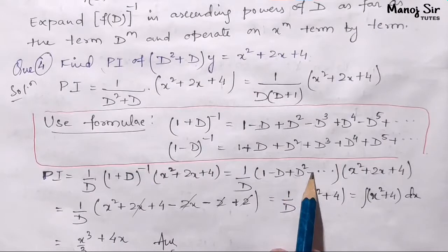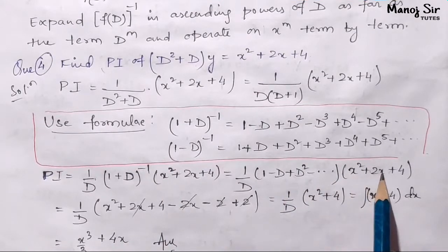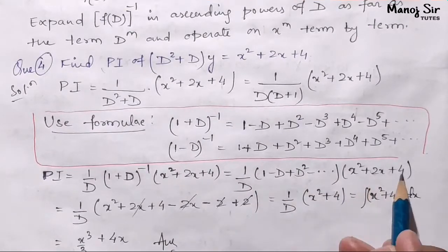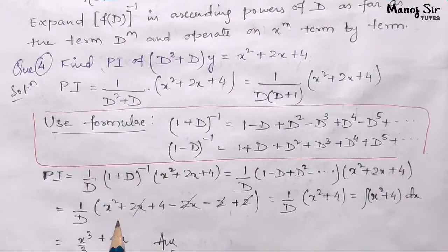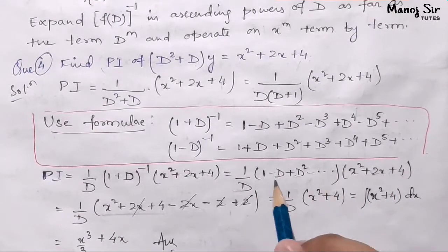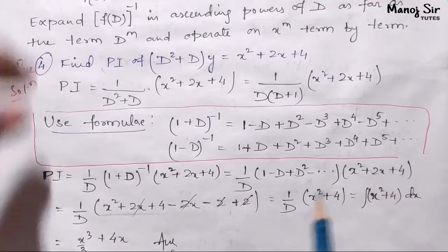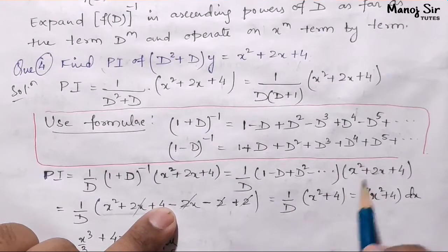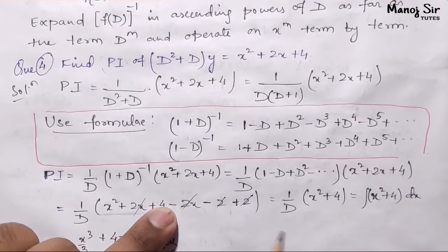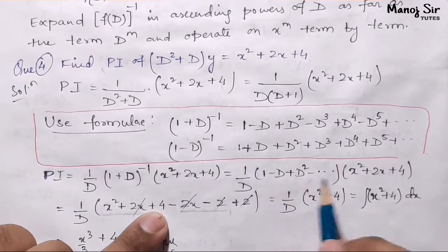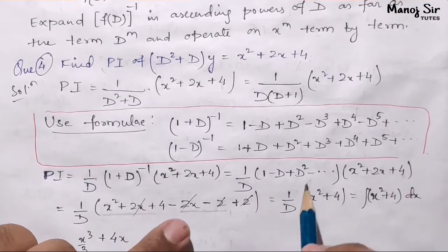Opening the bracket: 1 times (x² + 2x + 4) is as it is. Then minus D — that is, minus the differentiation of (x² + 2x + 4). So differentiation of x² gives 2x, differentiation of 2x gives 2, and differentiation of 4 gives 0. So the minus D term gives us minus (2x + 2).